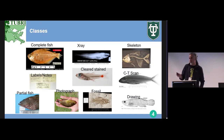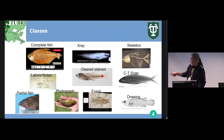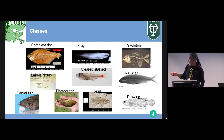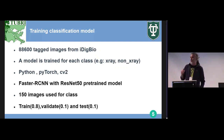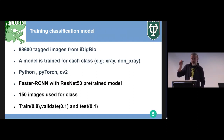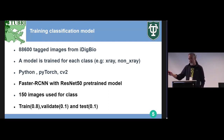Other classes include images with no fish, which we are not interested in — we are especially interested in complete fish images. By hiring contractors, they tagged almost 90,000 images by their classes. Of these 90,000 images, only 45,000 are usable for us; the other 45,000 are classes we are not interested in. We trained a model for every class.